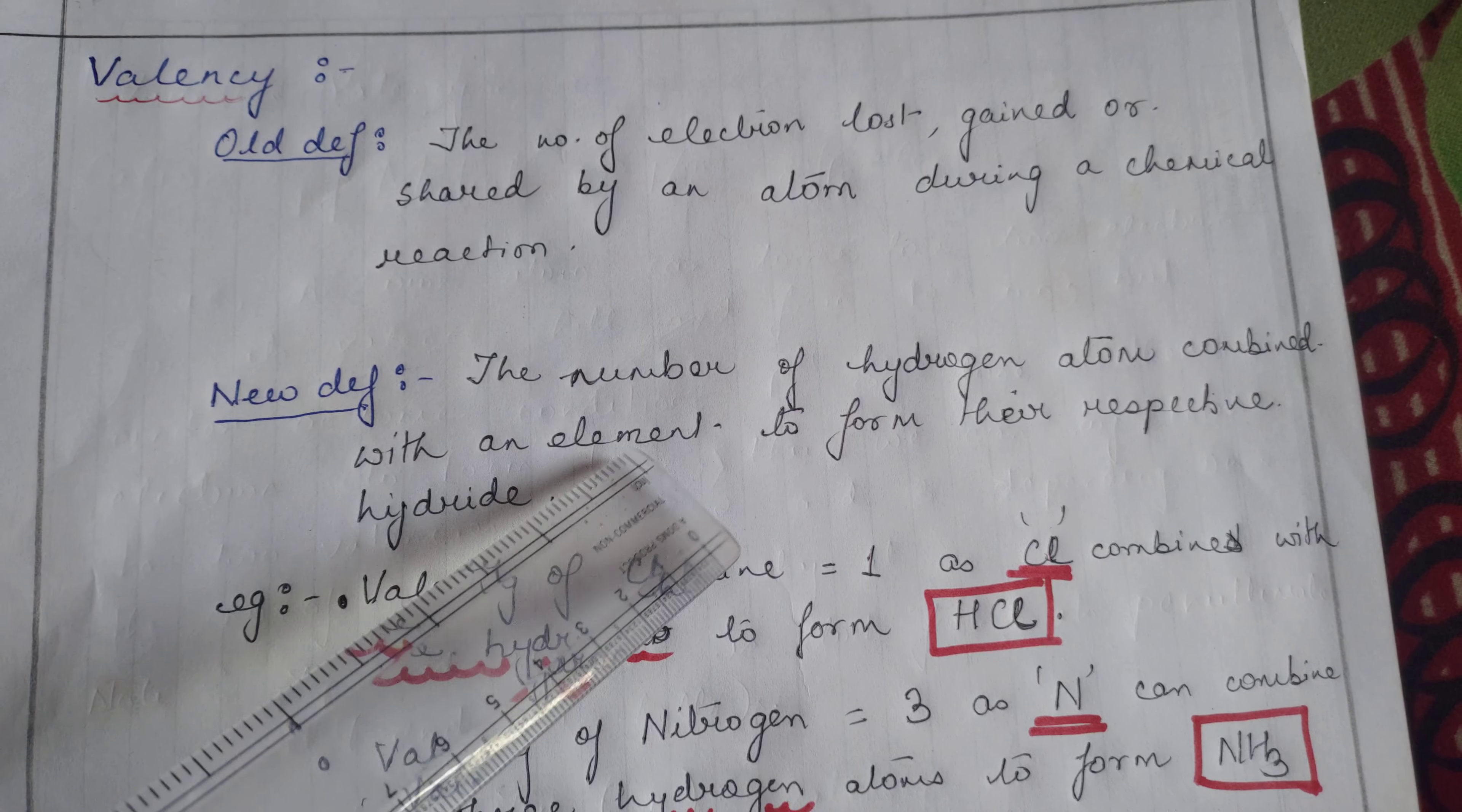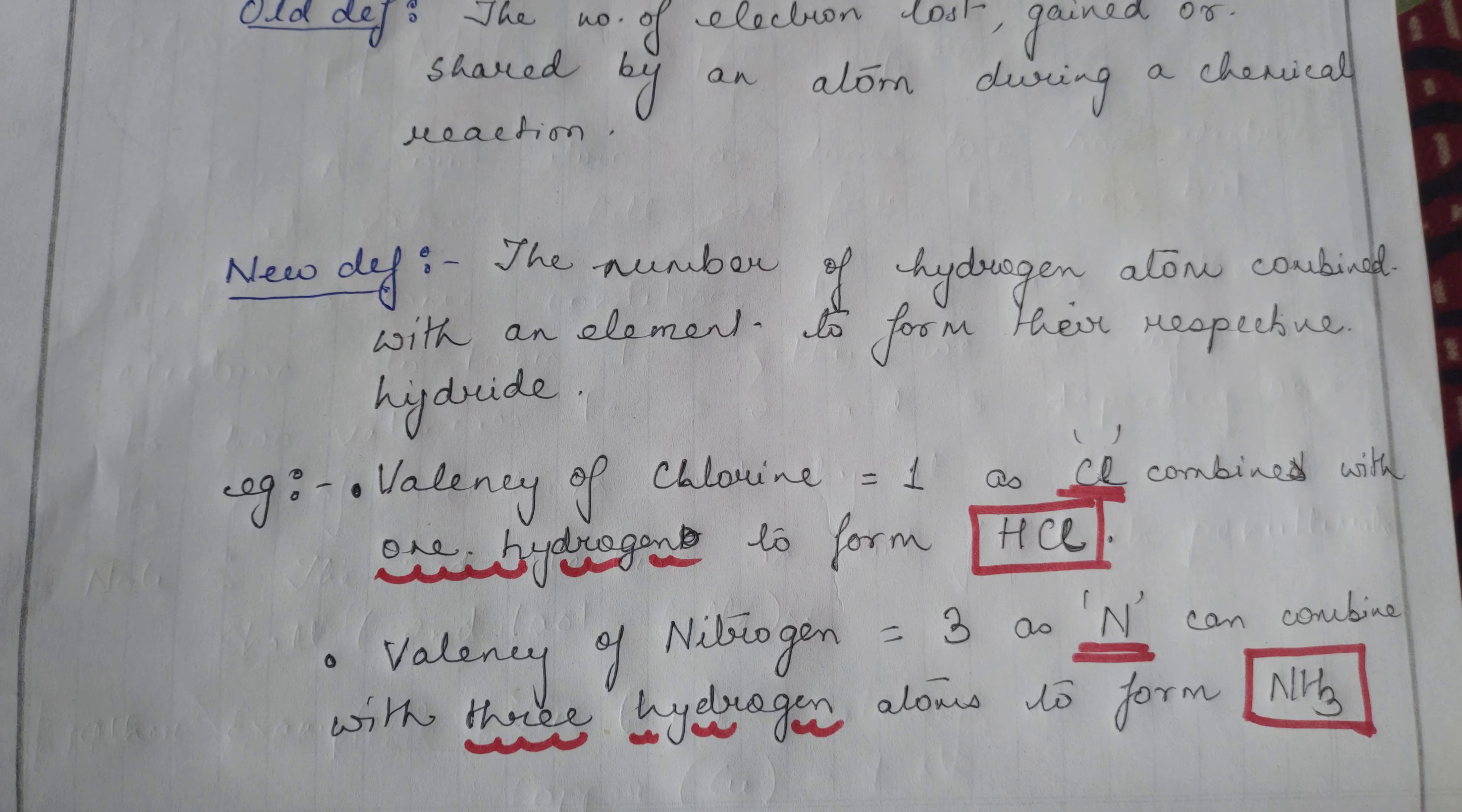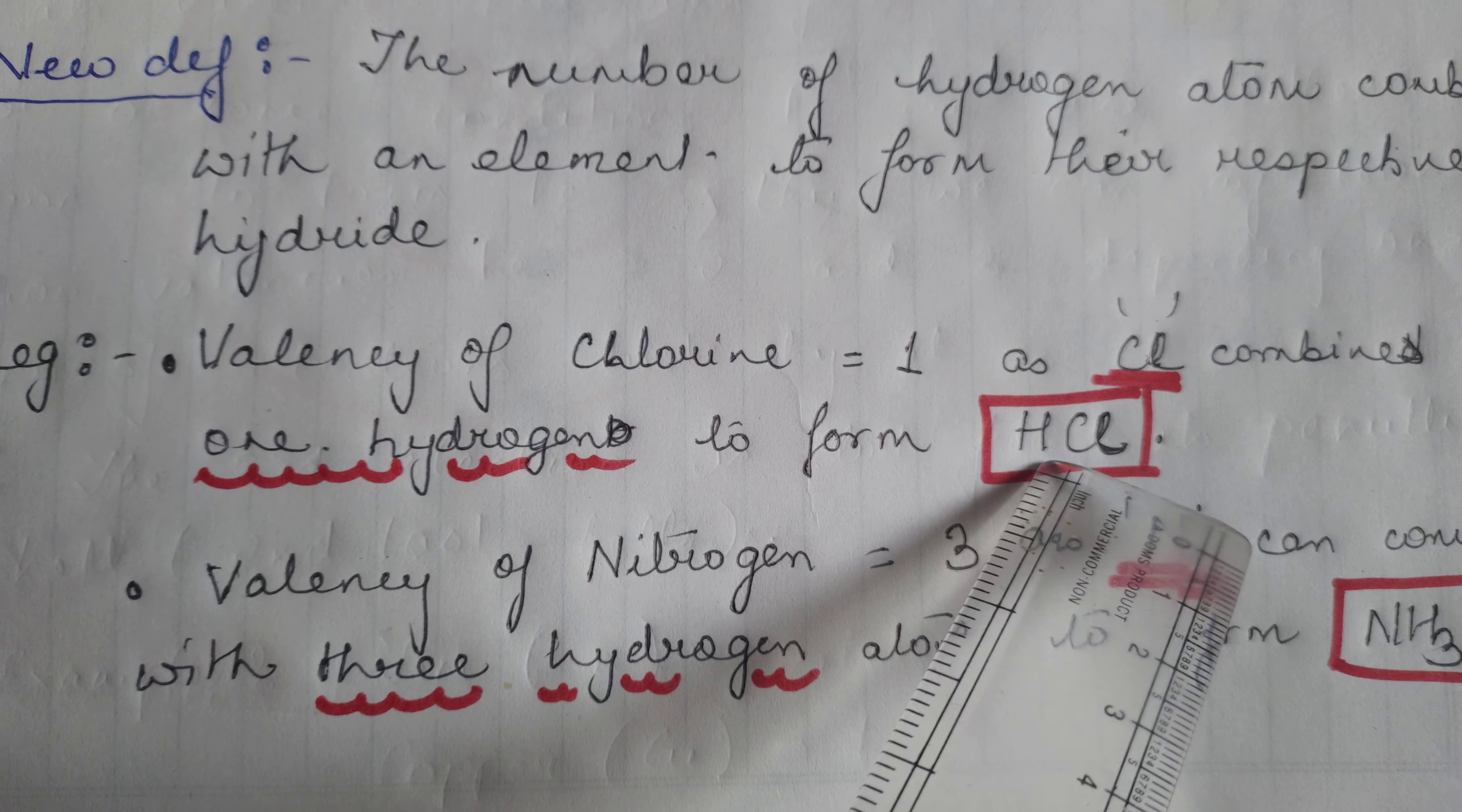You have to make sure that this is an old definition which nowadays is not used. Instead, a new definition has been coined: the number of hydrogen atoms that combines with an element to form their respective hydride. To understand this concept, let's take an example. We know about hydrogen chloride or HCl, right? How many hydrogen atoms combine with chlorine? Only one hydrogen combines with chlorine.